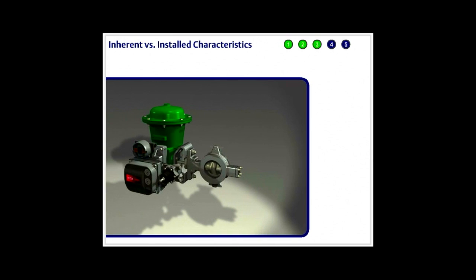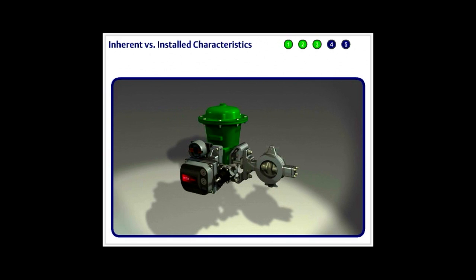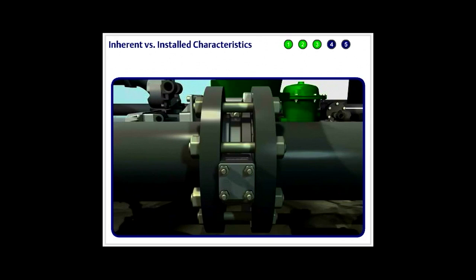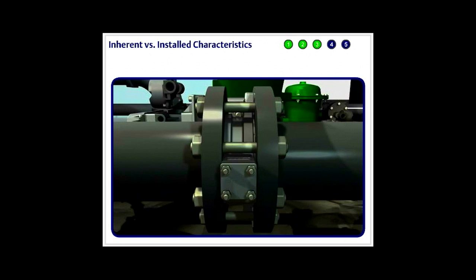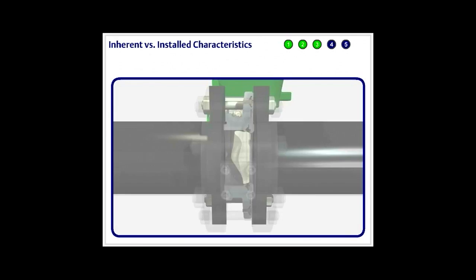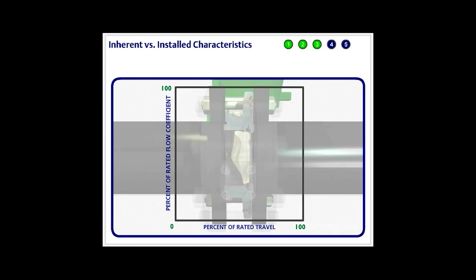A control valve has an inherent flow characteristic and an installed flow characteristic. Understanding the difference between the two is an essential step in achieving good process control. The control disc has an inherent equal percentage flow characteristic that is represented graphically by this exponential curve.